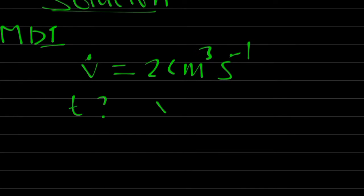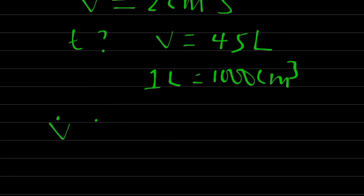T, when the volume is equal to 45 liters. But don't forget that 1 liter is equivalent to 1000 cm³. Volume flow rate is equal to volume over time.